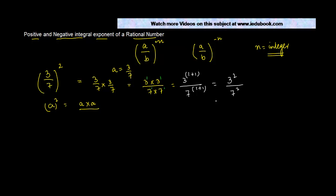Simplifying, this is 3 to the power 1 plus 1 divided by 7 to the power 1 plus 1, or 3 to the power 2 upon 7 to the power 2. So we conclude that for any rational number a upon b raised to the power n, we have a to the power n divided by b to the power n.